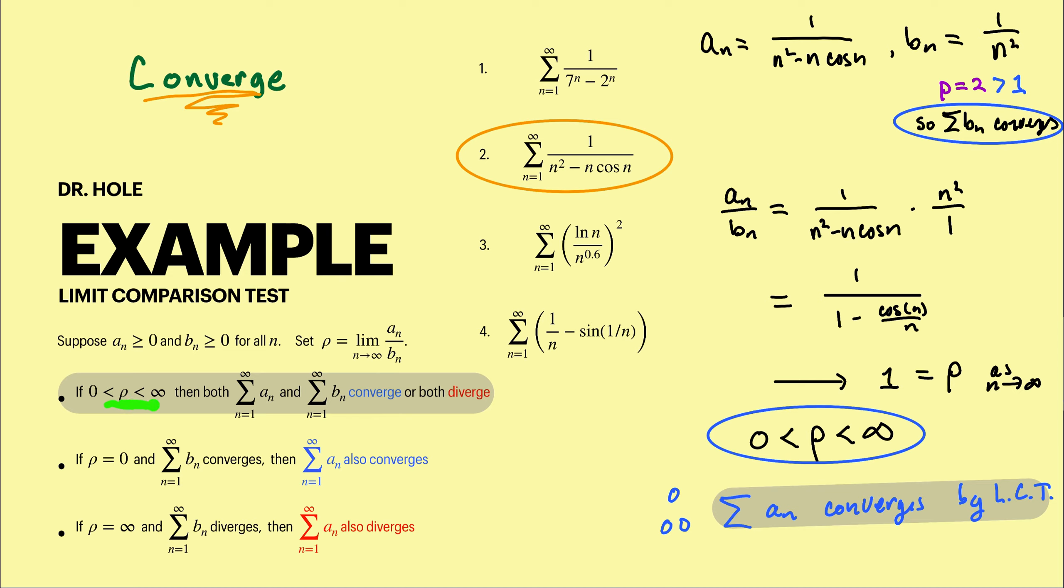Thus rho is equal to one. Rho being positive and finite with the series defined by the b_n's converging tells us that the series defined by the a_n's, in other words the given, also converges as we guessed.